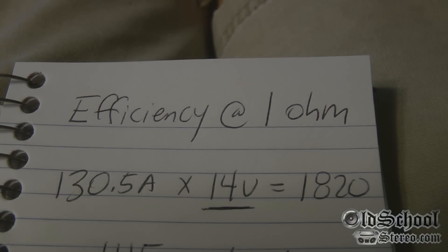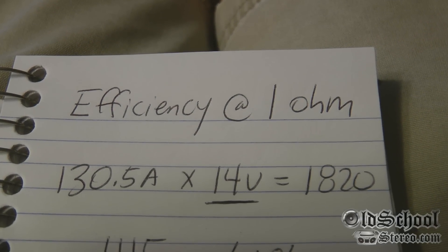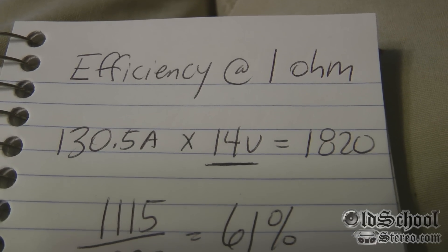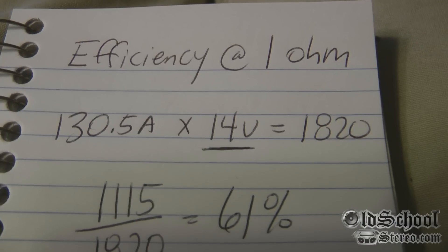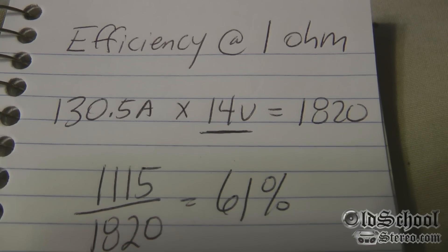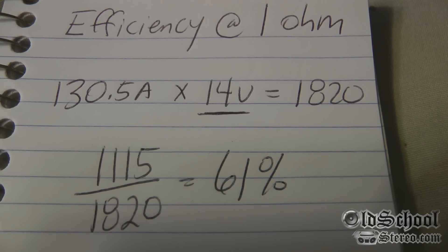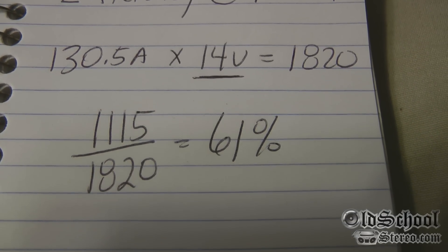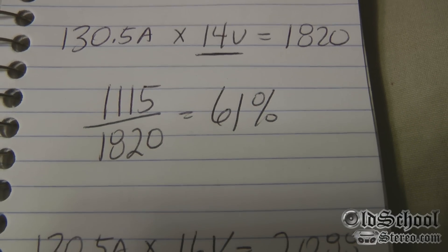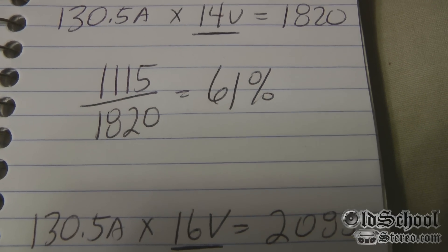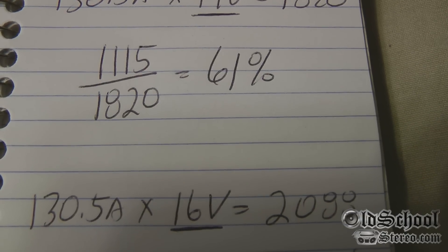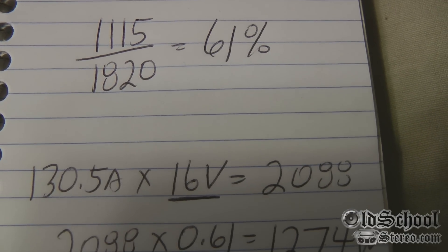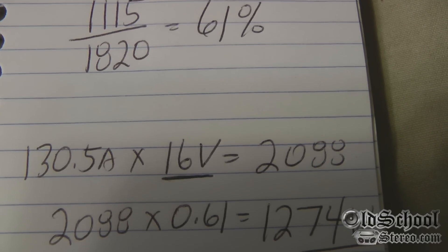Alright guys, what we're going to show here is the efficiency at 1 ohm. We've taken the amperage that we got from clamping times the voltage and got 1820. Then we took our 1115 watts that was actually measured and divided by 1820, that gives us 61% efficiency. So just out of curiosity we took 16 volts and put that in the equation and got 2088. Multiplied 2088 times 0.61 for efficiency and we get 1274 watts.